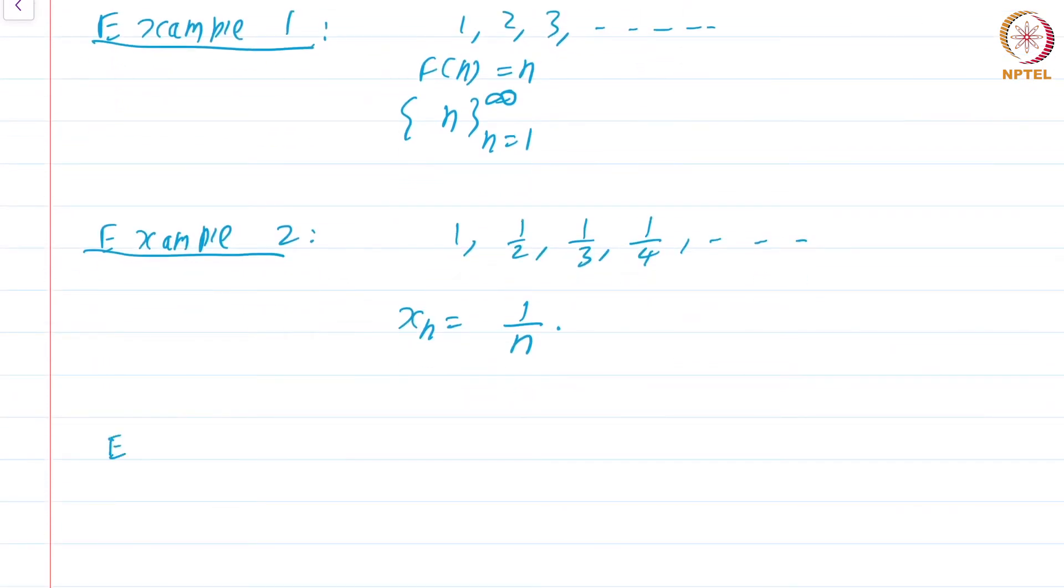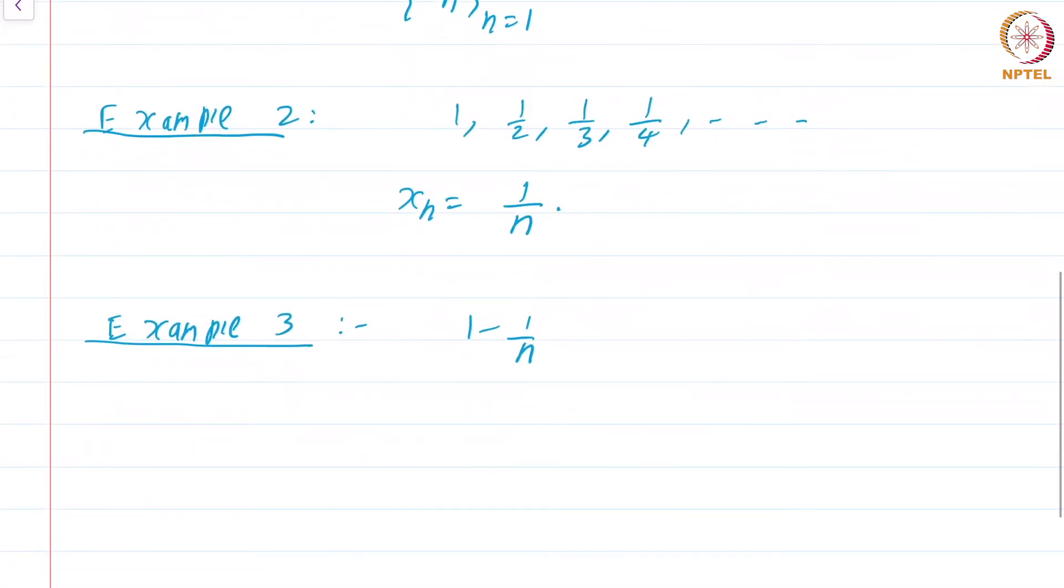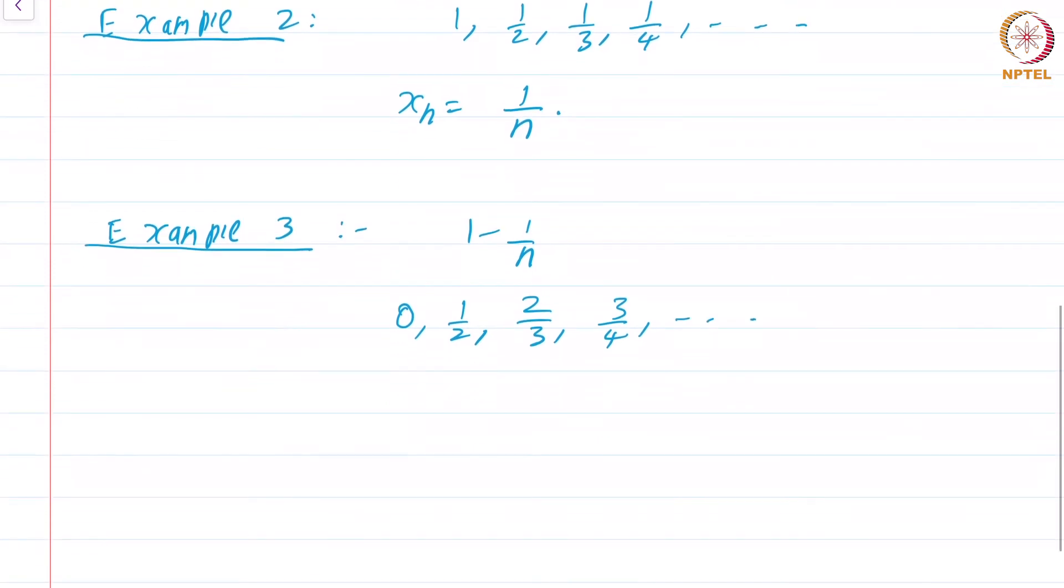Example 3: Let us twist this example a little bit. Consider the sequence 1 minus 1 by n. The terms look like 0, half, 2 by 3, 3 by 4, and so on. This is a sequence that is ever increasing and seems to converge to the point 1.